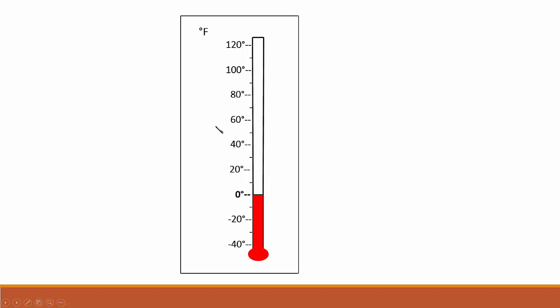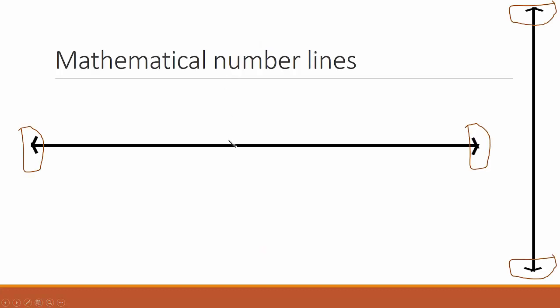Notice the steps are always the same size. Mathematical number lines have arrows at the end, and they show that numbers can go on forever because they're ideas, unlike the ruler or the thermometer.